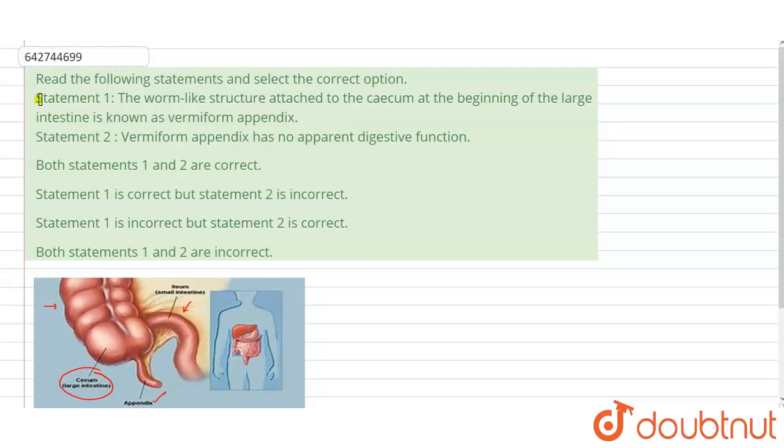Two statements are given here. Statement number one says the worm-like structure which is attached to the cecum at the beginning of the large intestine is called as vermiform appendix. While there is a second statement given, it says that vermiform appendix has no apparent digestive activity.